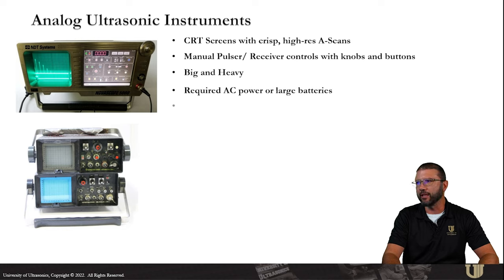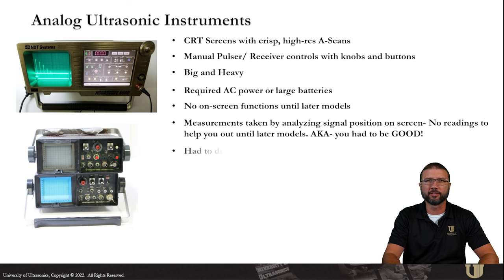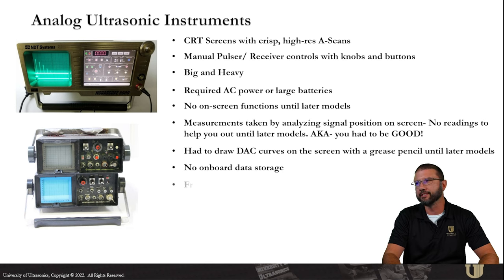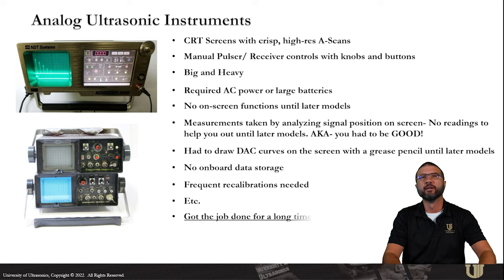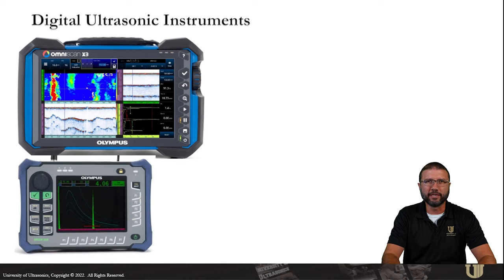We started out using the analog UT instruments. They had small CRT screens with really high resolution A-scans, manual pulser and receiver controls, knobs and buttons. They required AC power or large battery packs. There was limited on-screen functionality until later models. Your measurements were taken by analyzing your signal position on the screen. You didn't have any readings to help you out. DAC curves were often drawn directly on the screen by hand until later models came around. You had limited to no onboard data storage.